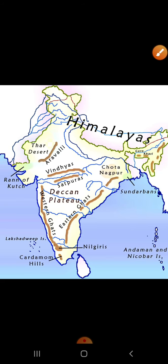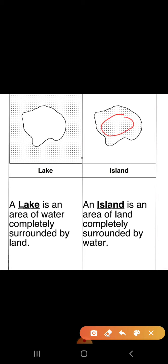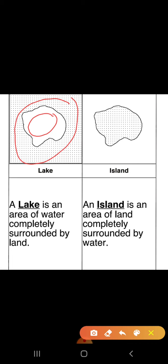Now we will learn some more related terms. A question arises: if a piece of land is surrounded by water from all four sides, what do we call it? The dotted area represents land and the plain area represents water. A piece of land surrounded by water from all four sides is called an island. Conversely, a water body that is surrounded by land from all four sides is called a lake.